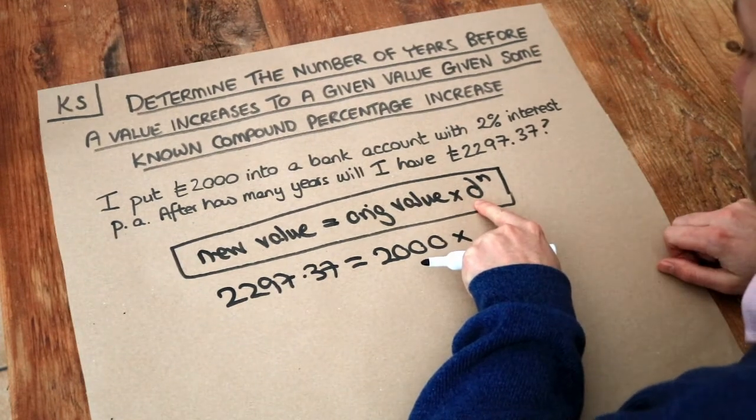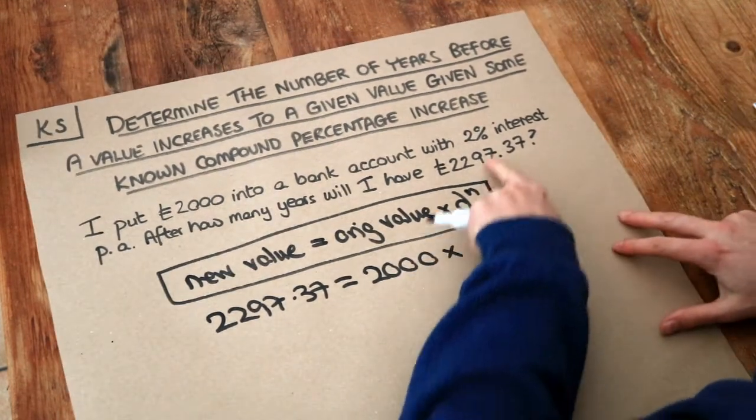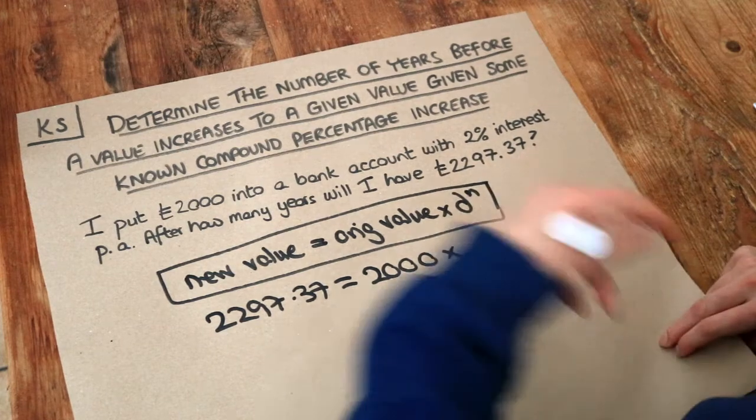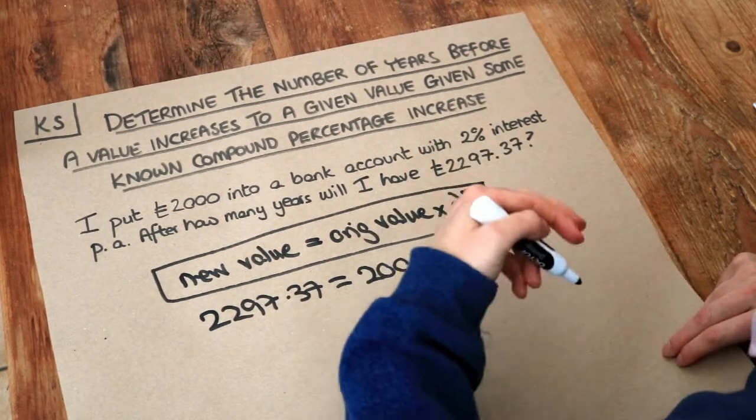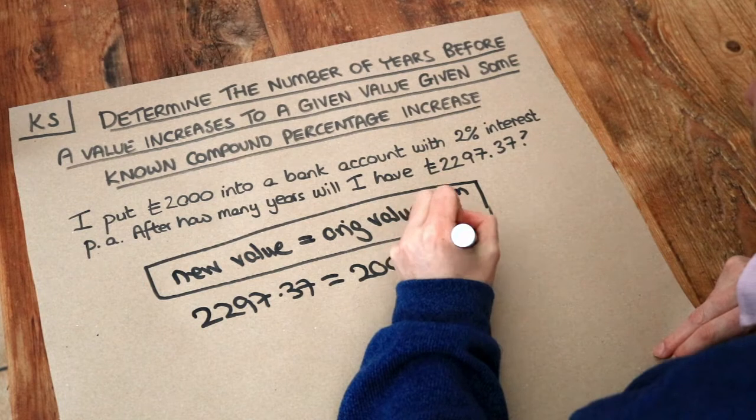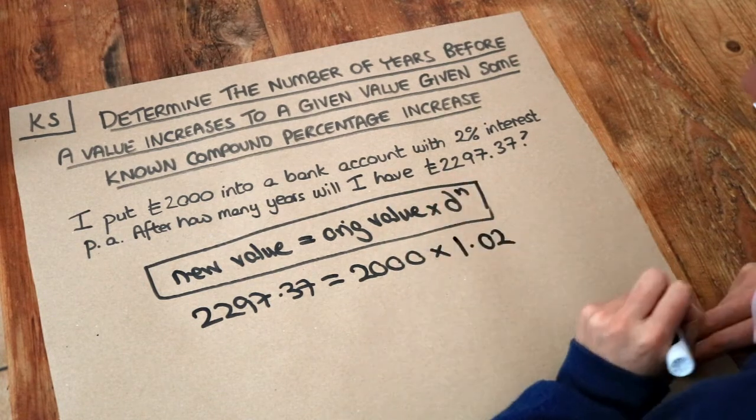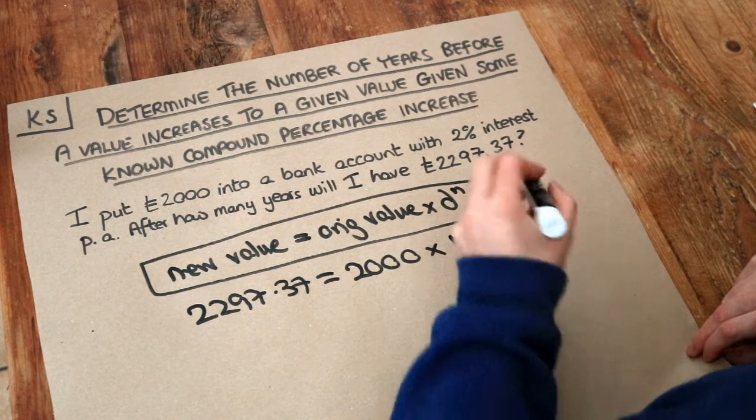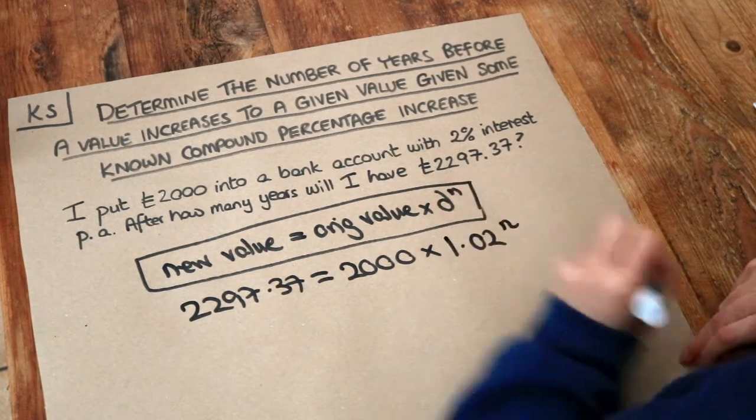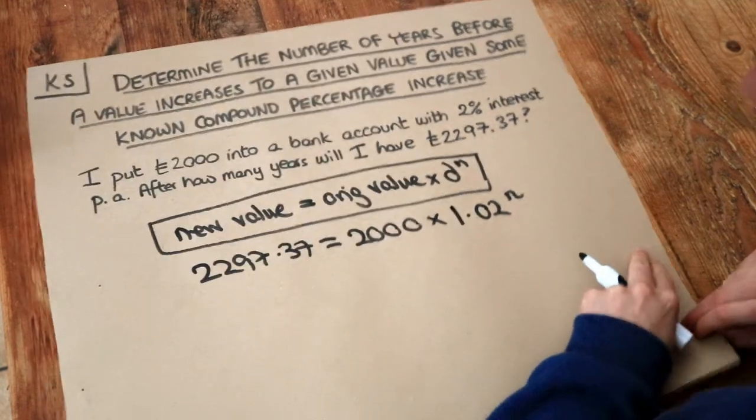Now the decimal multiplier is a decimal representing a 2% increase. And in previous videos we saw that a 2% increase we could represent with a decimal multiplier of 1.02, and then we're applying a power of n. We don't know how many years it is, so we're going to have to keep that as n for the moment.